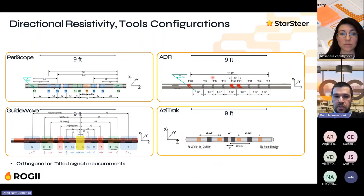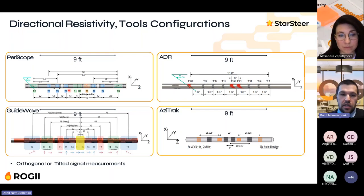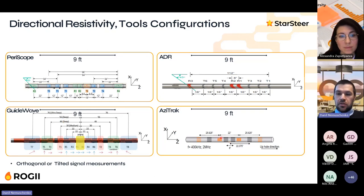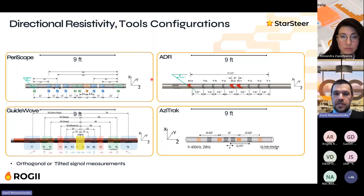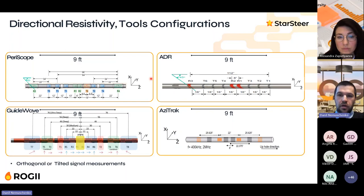Tool configurations differ greatly. AziTrack has an orthogonal position of transmitter against receiver and only one spacing. ADR has a 45-degree angle between transmitter and receiver with many different spacings. GuidWave has both orthogonal and 45-degree configurations. These tools are very different, and before running forward modeling and deploying these tools in the hole, we must understand the differences between them.